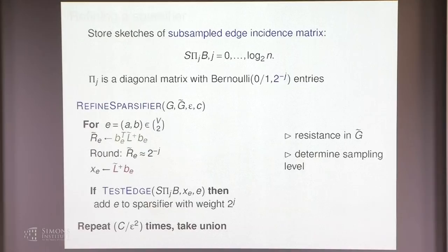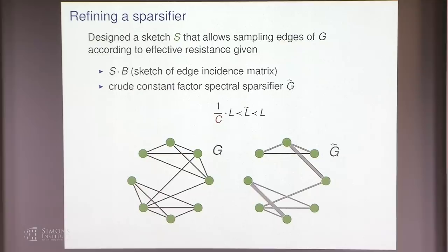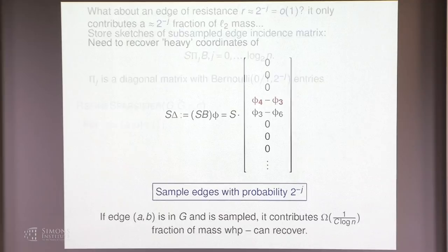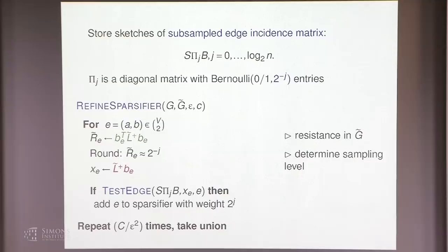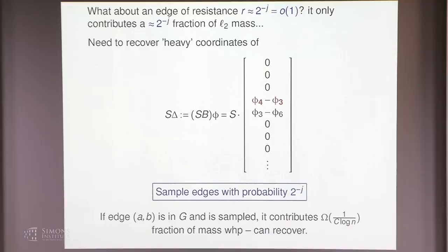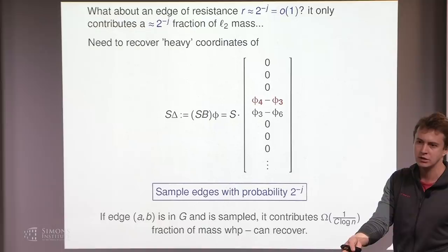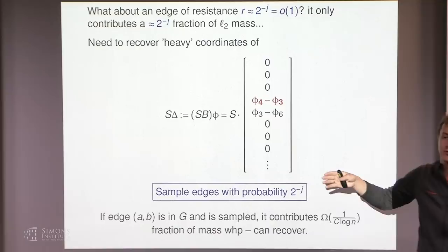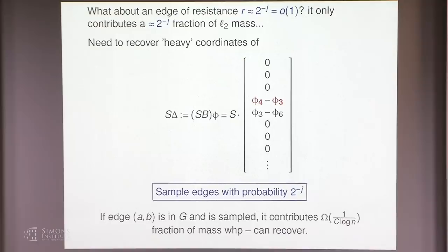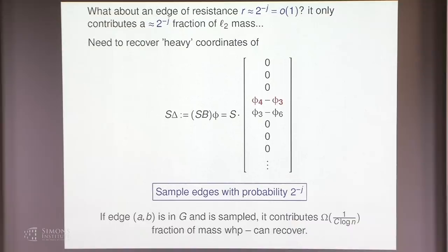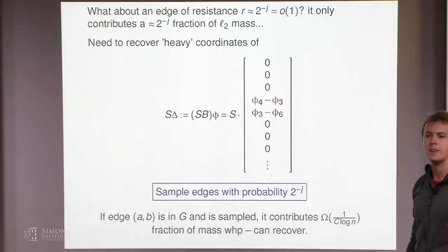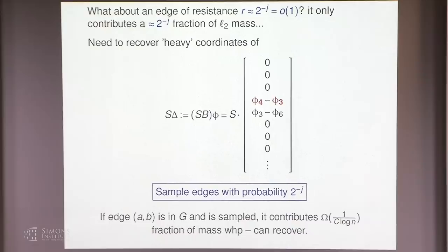A student asks whether each refinement step requires a new pass over the data. No — the decoding is iterative over a logarithmic number of steps, but we don't have to access the data again. We prepare all the sketches first in a single pass, then run the adaptive decoding on those stored sketches. This is similar to the spanning tree algorithm, which also ran for a logarithmic number of steps on the same data.